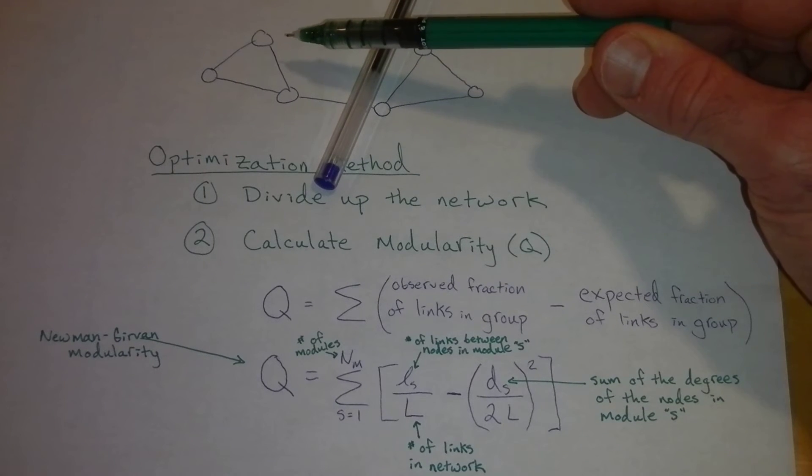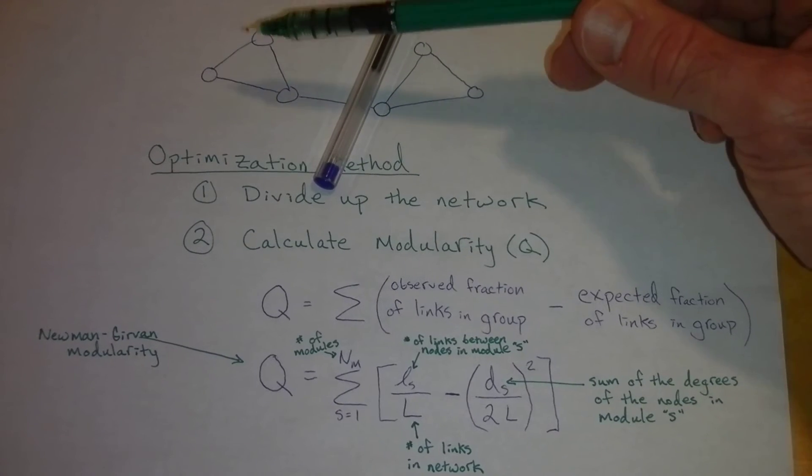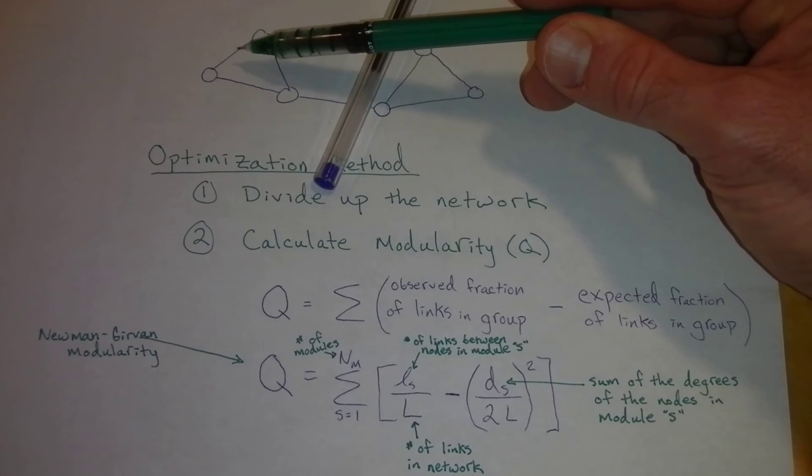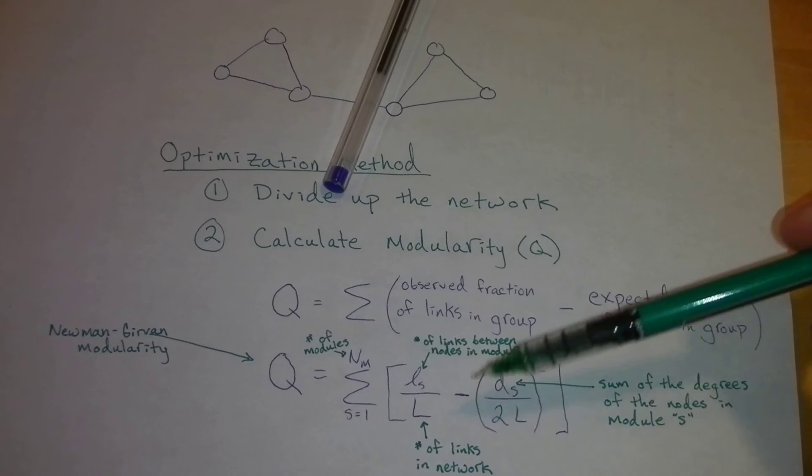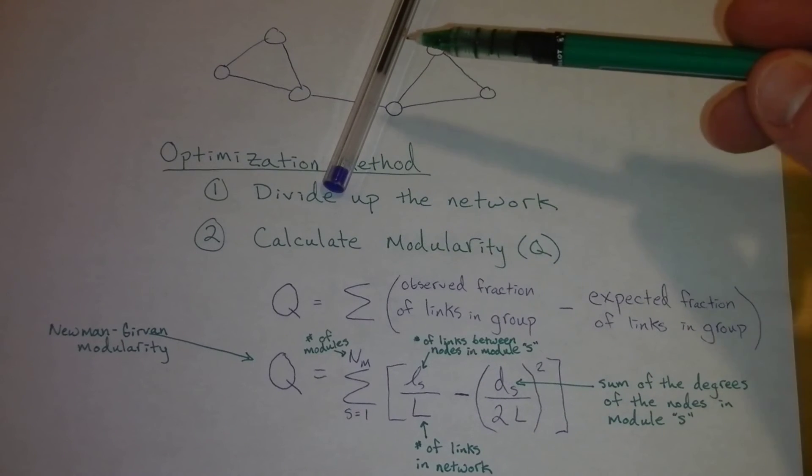We count up the number of links between nodes. In this case, it's going to be one, two, three links, divided by the number of links in the network. So there's seven links total in this network.